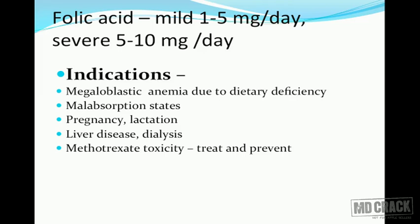There are drugs that interfere with folic acid pathways. Methotrexate is an anti-cancer agent, and in large doses it manifests as folic acid deficiency because it inhibits the conversion of dihydrofolate (DHF) to tetrahydrofolate (THF) by inhibiting the enzyme DHF reductase. As a result, THF is not formed and DNA synthesis is affected.